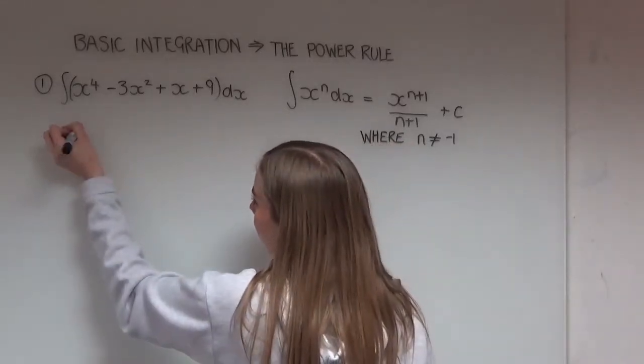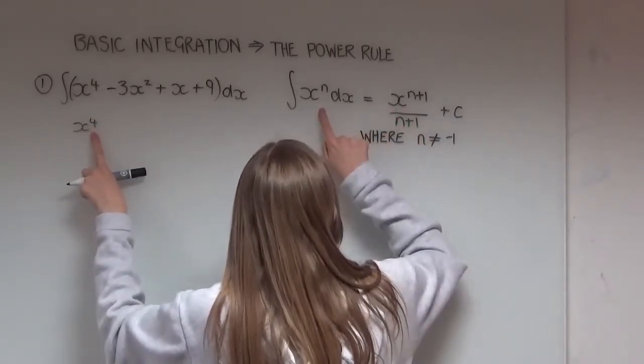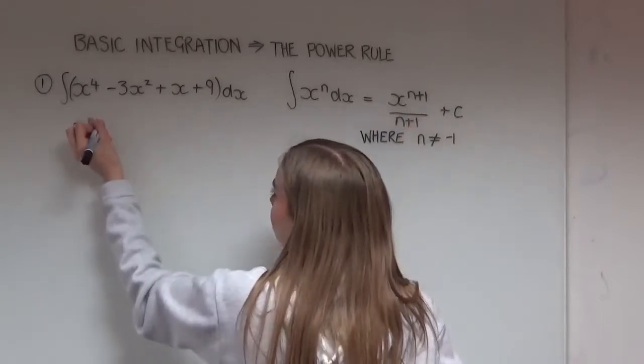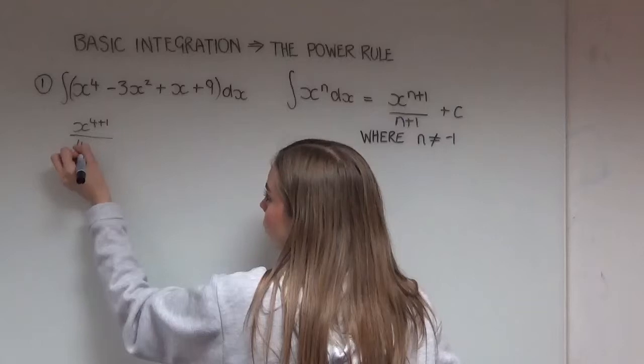So x to the power of 4, in this situation 4 is our n. What we have to do is add on 1 to our power, so that's 4 plus 1, and then divide it all by n plus 1, which is 4 plus 1.